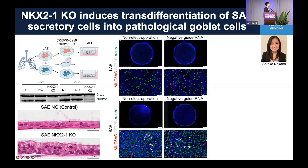Looking more generally at what happens in NKX2.1 knockout cultures in large and small airways — we have two controls: non-electroporation and negative guide RNA CRISPR control. Green shows ciliated cell markers alpha-tubulin, and red shows MUC5AC-positive cells. SFTPB-positive cells are only present in the small airway cell cultures as shown previously.